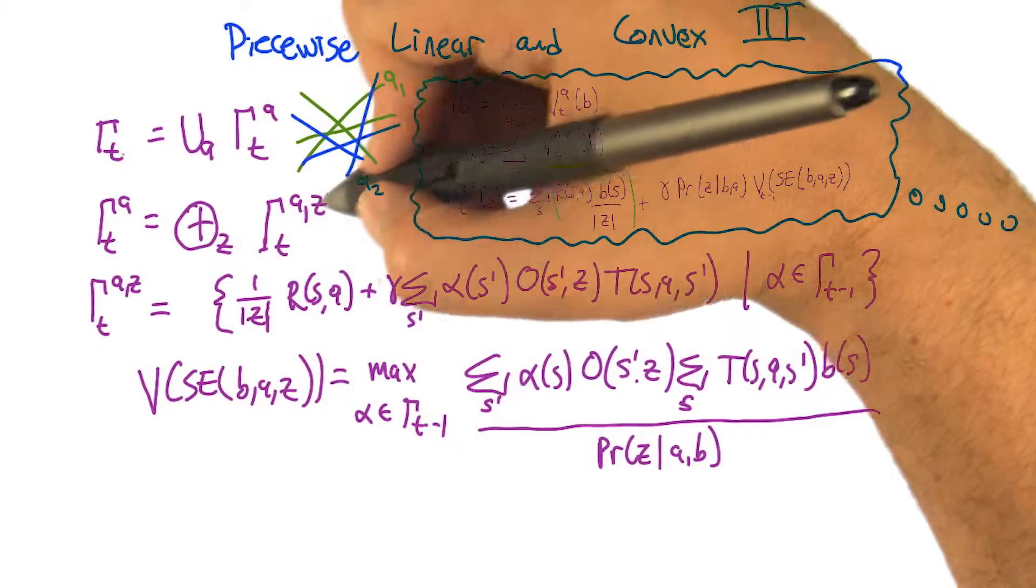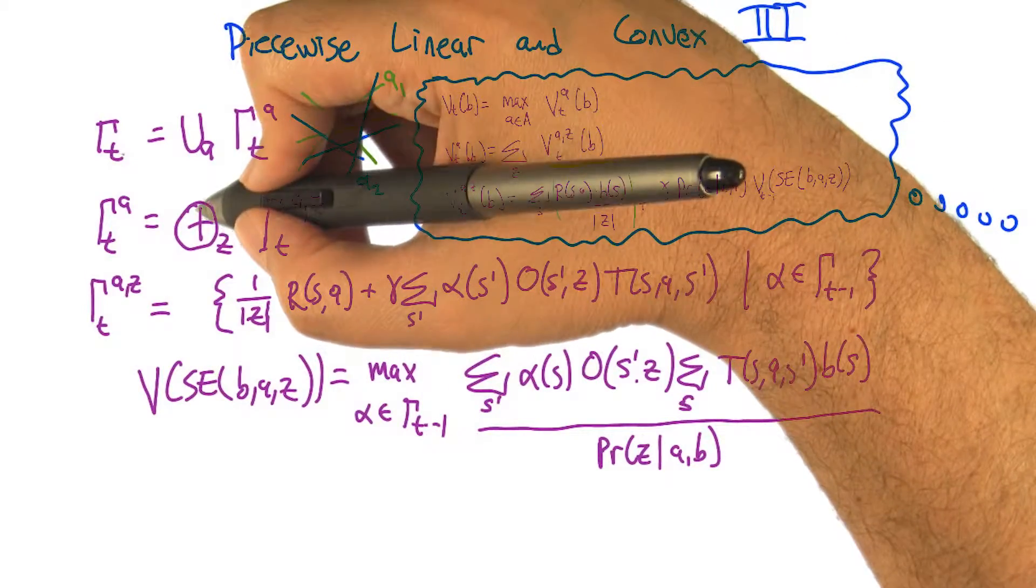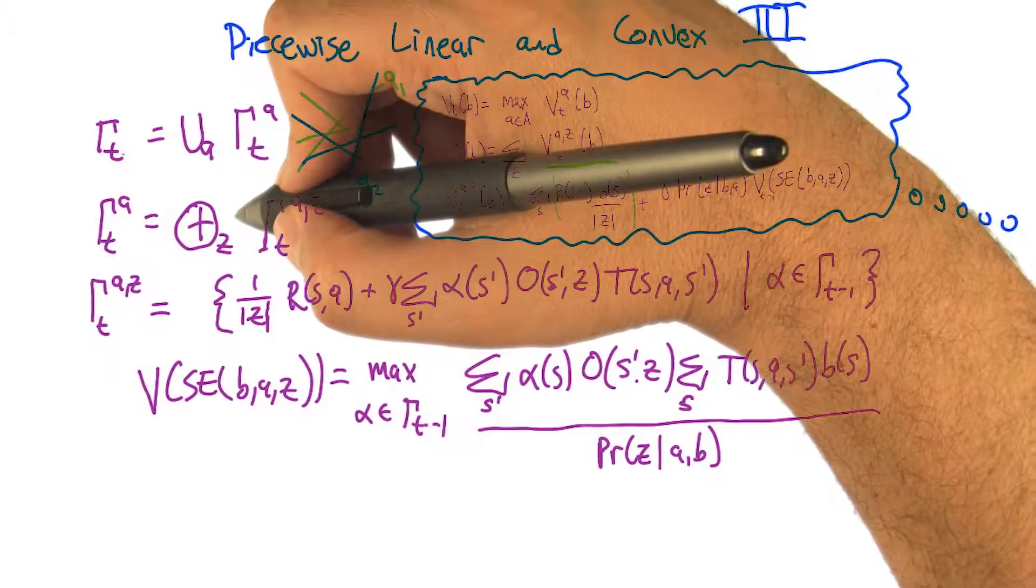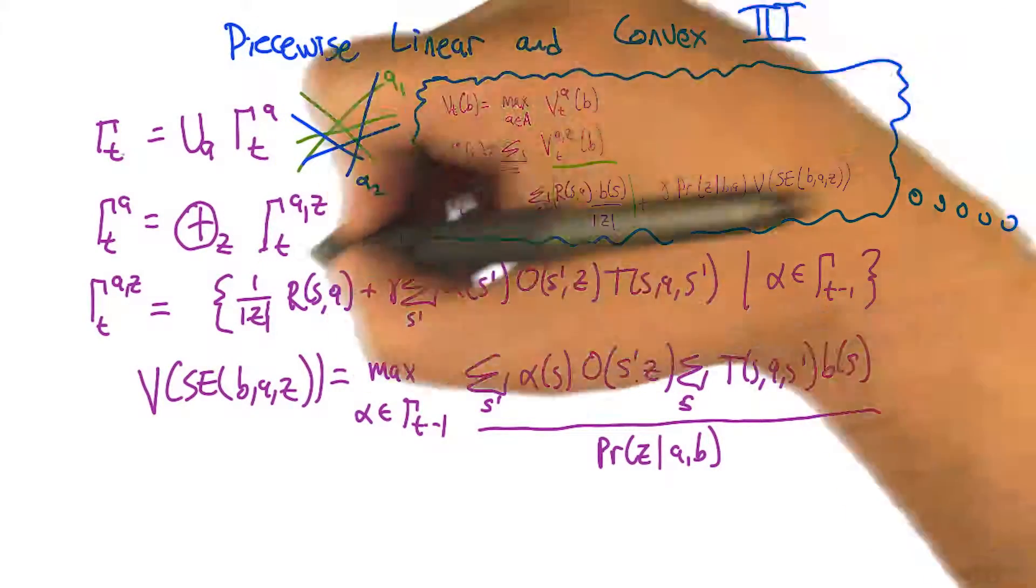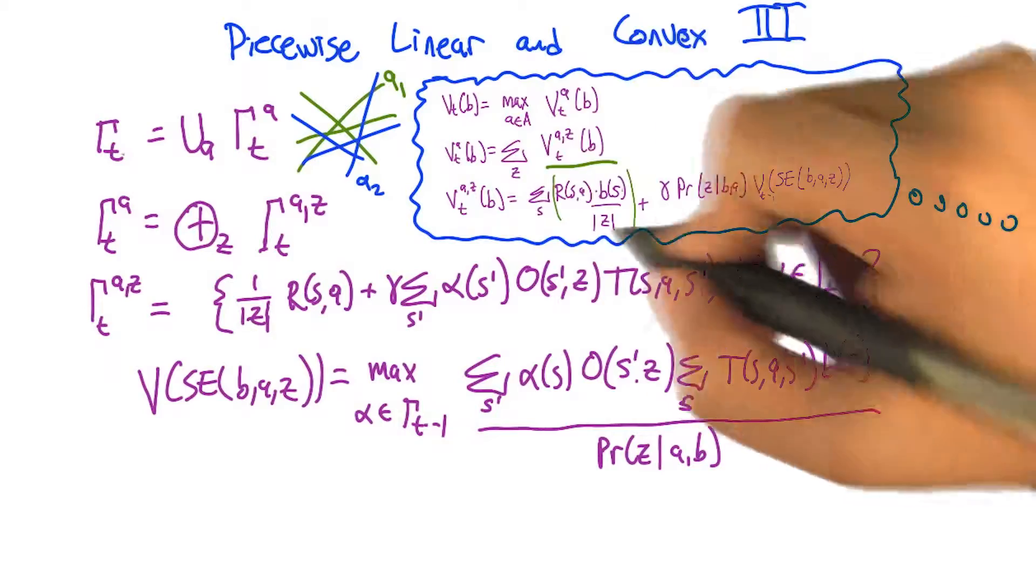then this sum over observations can also be represented using operations over bags of vectors. And in particular, what we end up having to do is take those bags of vectors and compute what I like to call a cross sum. It's basically the sum where we choose for each of the observations a vector and then we add those vectors together. It ends up producing the same effect as this sum.